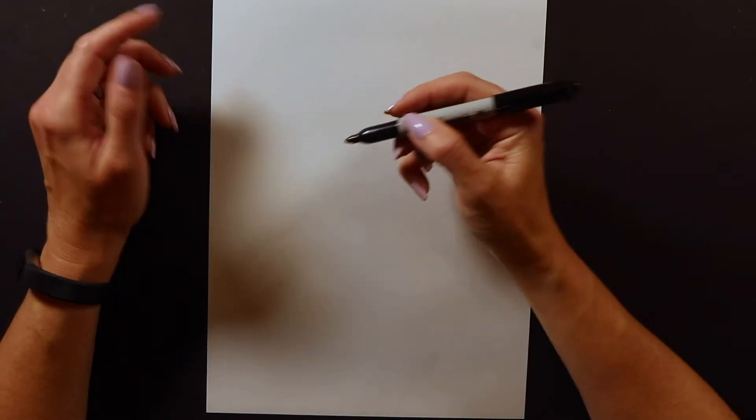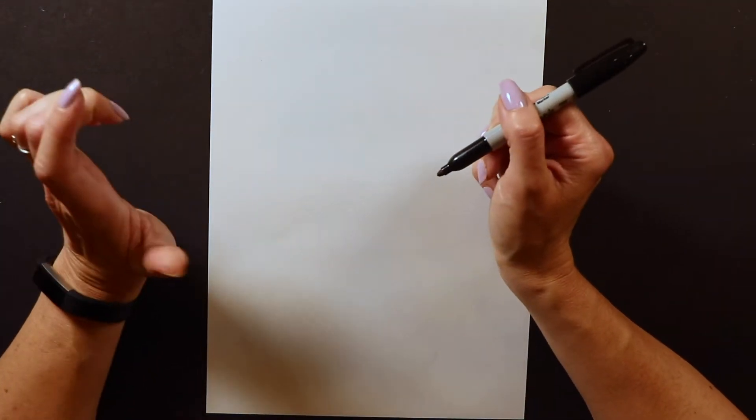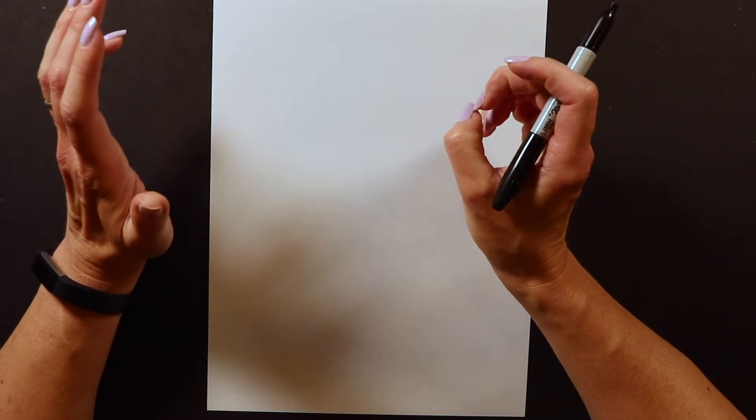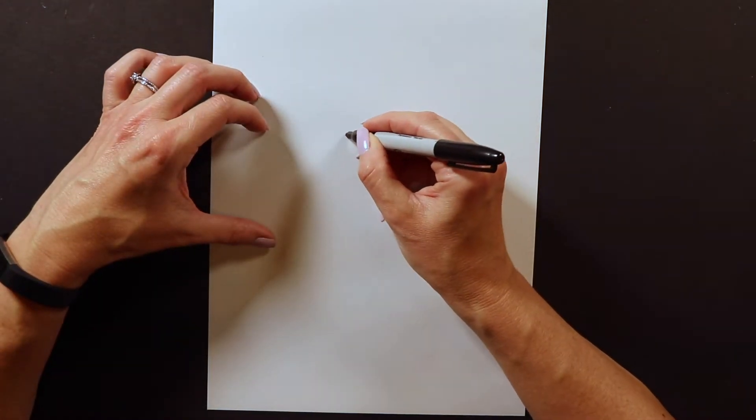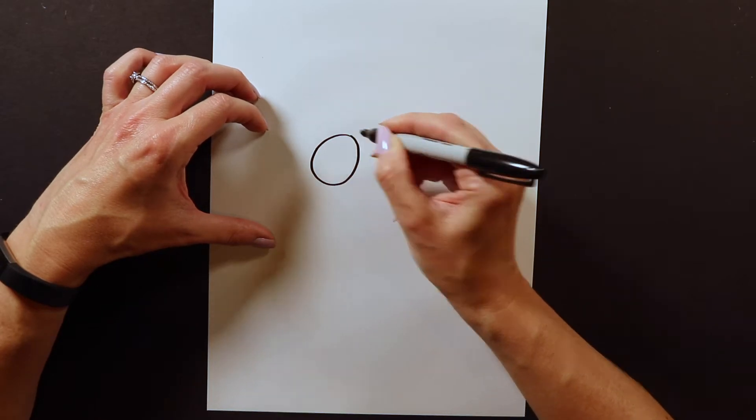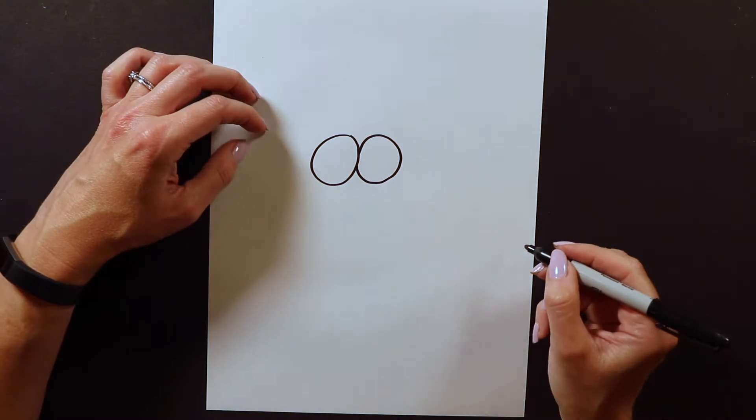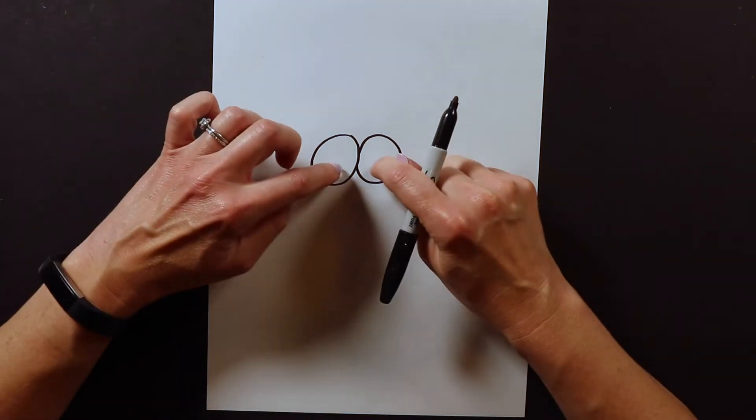I'm starting with Sharpie on paper but you guys work with pencil and eraser first just in case you make a mistake. So I'm gonna start with my owl's head. For the owl's head I start with two big circles like this and mine are touching.